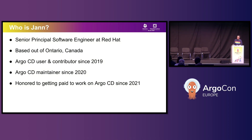I've left this slide in about Jan because he is the originator of the project. He is our senior principal software engineer at Red Hat for OpenShift GitOps and he's based out of Ontario, Canada. He's been an Argo CD user and contributor since the early days in 2019, prior to Argo CD's GA release. He loved the Argo CD community so much that he kept contributing in his free time, eventually becoming one of the maintainers in 2020, and was hired by Red Hat in 2021 to work on Argo CD full-time.